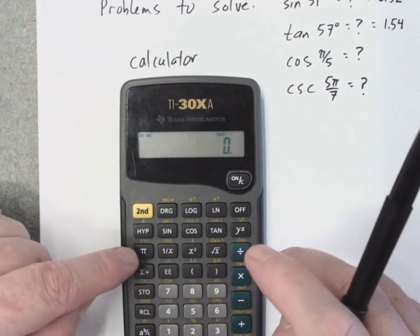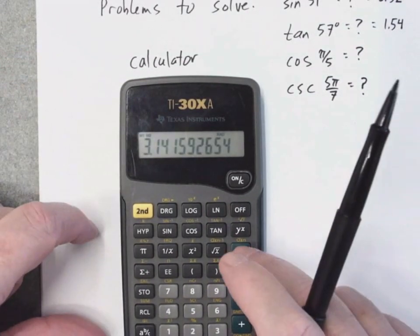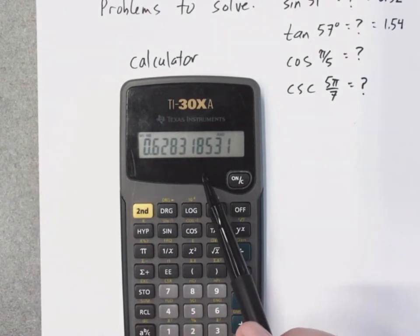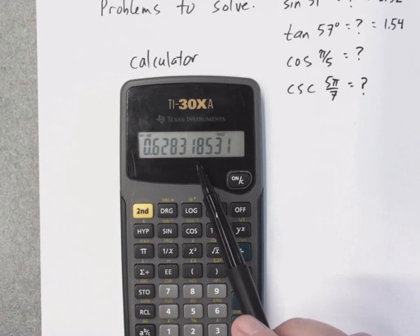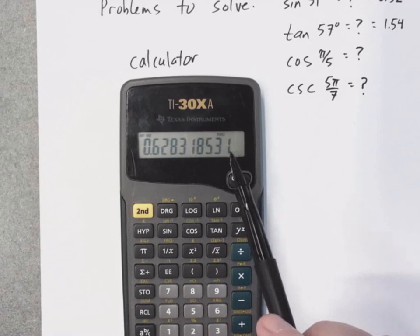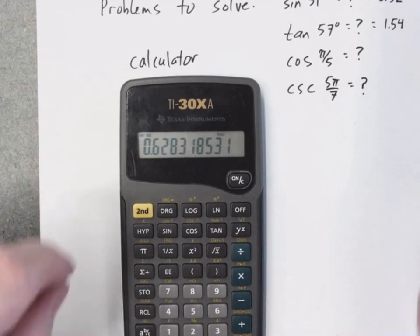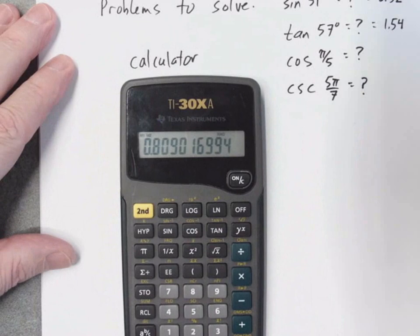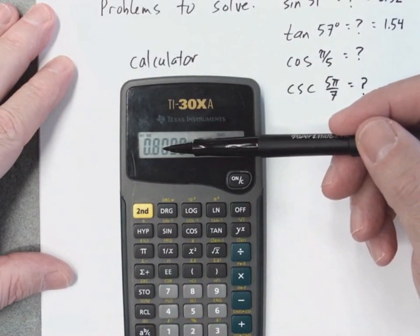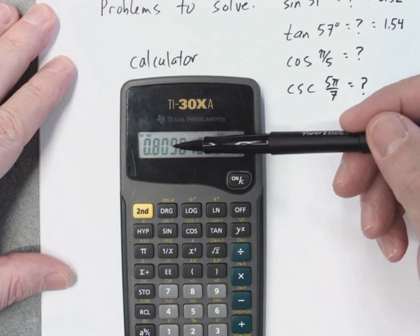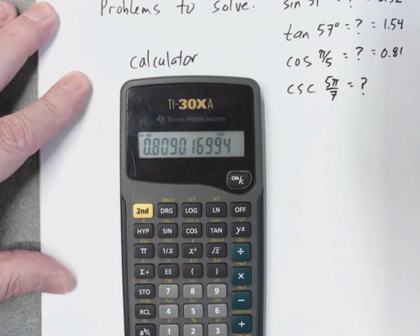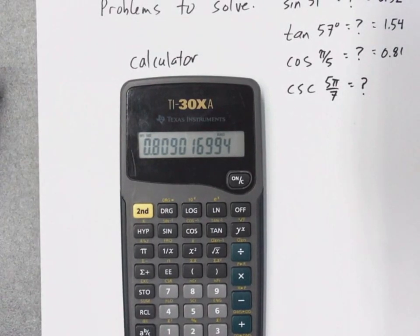So the cosine of pi over 5, I'm in radians, pi divided by 5. So there is pi divided by 5, 0.6283 whatever. Once again, I'm not going to round this, I'm just going to leave it in my calculator, and then go press the cosine key. So once again, if I'm asked to round to two digits, 0.80, but I look to the next digit, it's a 9, which is going to cause that to bump up to 0.81.